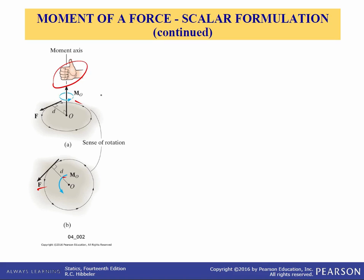Note that the moment vector is represented three-dimensionally by a curl around an arrow, showing the direction of the moment. Remember, moment is a vector just like force, and the curl around that vector gives you the sense of direction. In 2D, the moment vector is represented by a curved arrow about the point about which it acts.